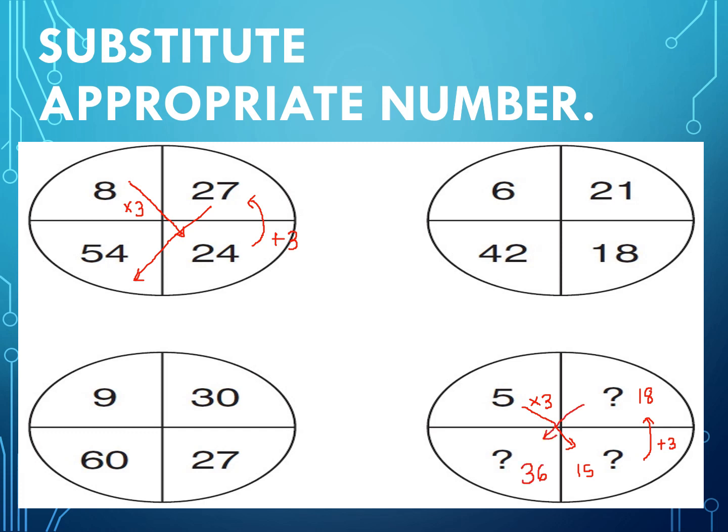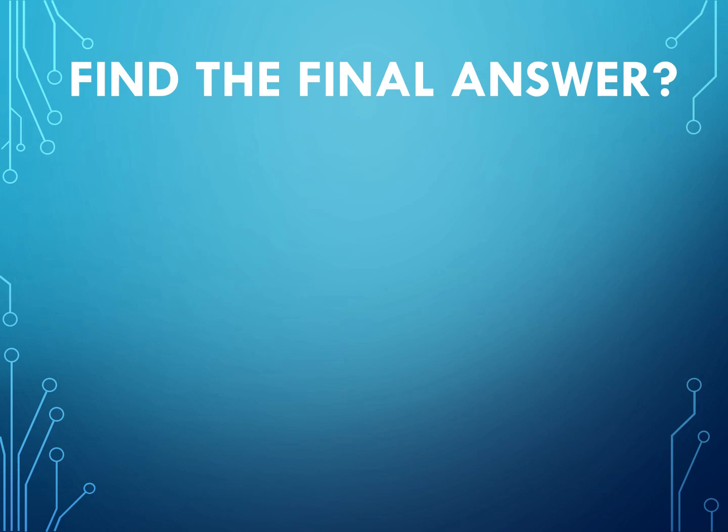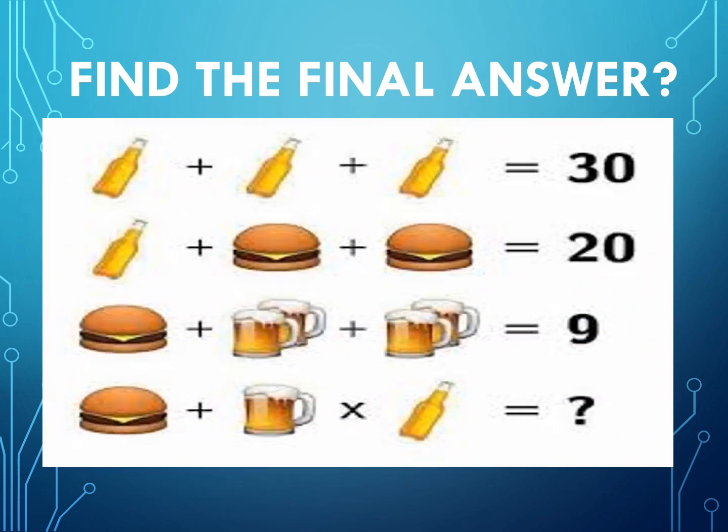Next question: find the final answer. This is an interesting question. This will make you memorize the numbers. So first we will check the given details. You can see bottle, burger, and a glass. First check the first line itself to get the value of bottle - each bottle is 10.